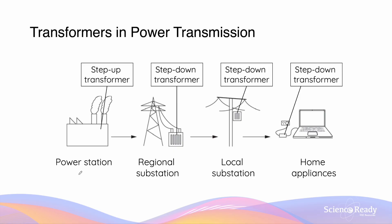In summary, both step-up and step-down transformers are used in different stages of the whole power transmission and distribution process. A step-up transformer is always used to greatly increase the voltage output from the power station before it is transmitted over long distances, to minimise the amount of power converted to heat. At much smaller regional and local substations, where the energy has already been transmitted over long distances, the voltage is greatly decreased by using step-down transformers. Right before the power is used by smaller appliances in households, the voltage is further decreased by using smaller step-down transformers found in our devices.